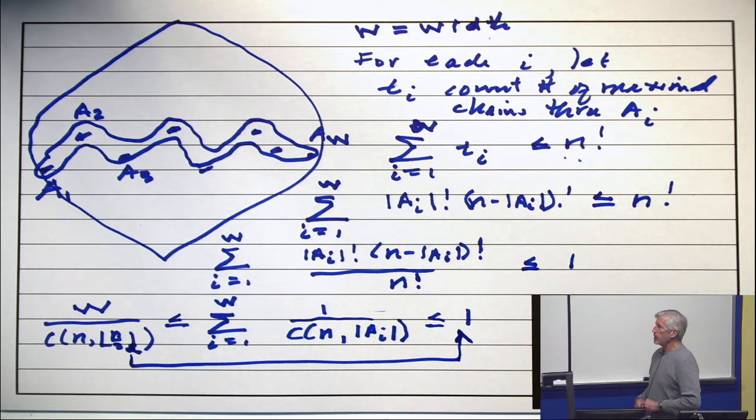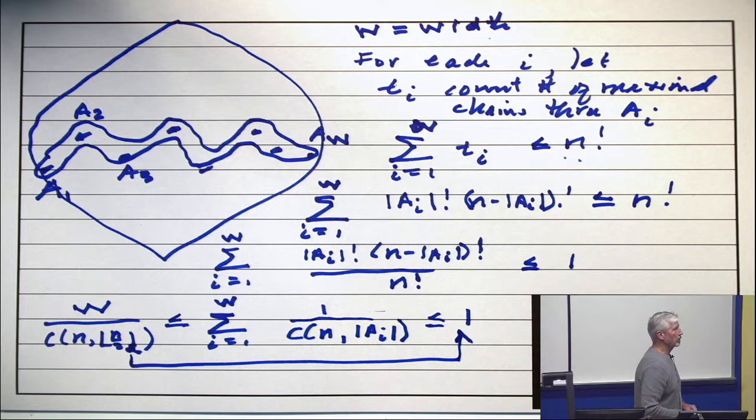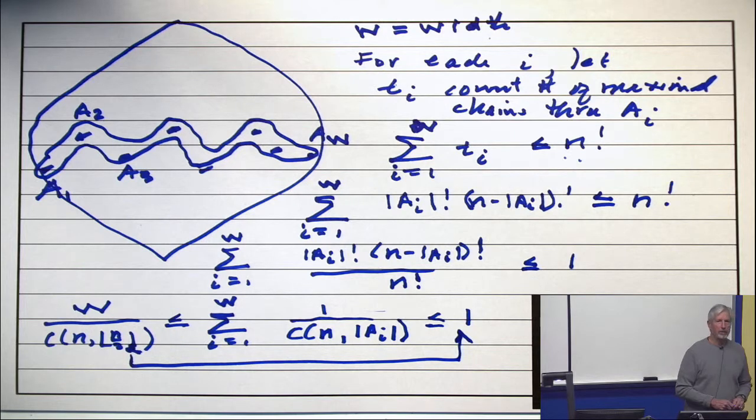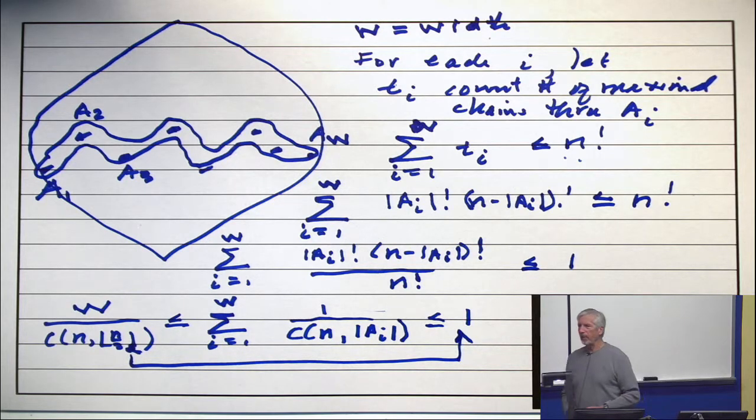So there is an anti-chain of that size. And the biggest anti-chain has size at most C n choose n over 2. So I now know what the width is. Have I solved the Dilworth problem? No. Only one half of it. I know the width.